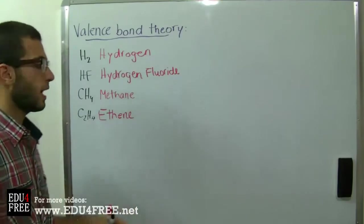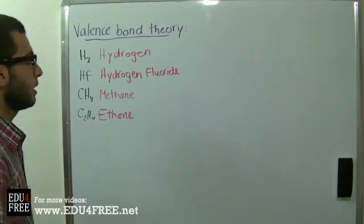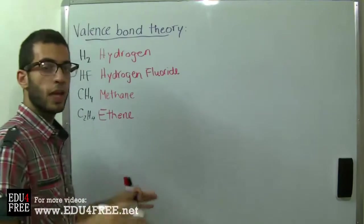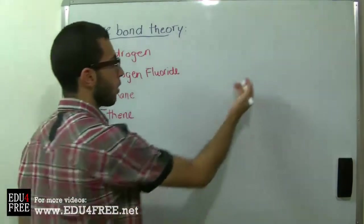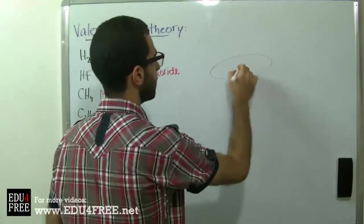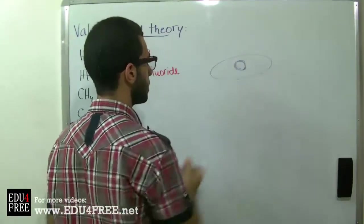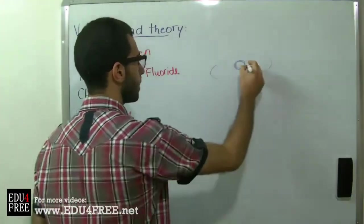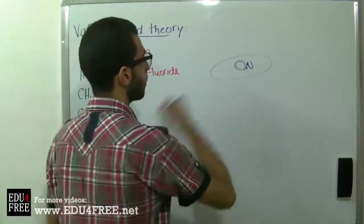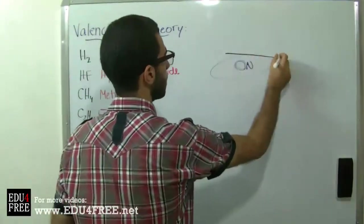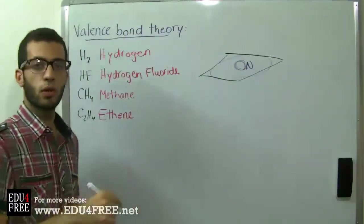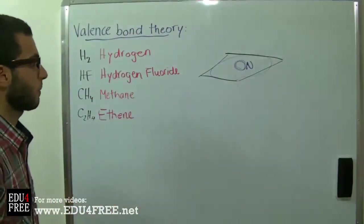Previously, people thought that the orbital's shape in the atom has a planar shape or a planar structure — meaning it looks like it's drawn on a piece of paper.